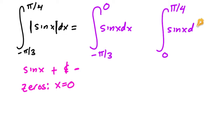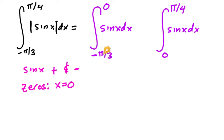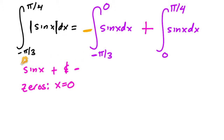Whichever interval sine is negative on, you multiply by a negative. Since sine is negative from negative pi over three to zero, you add a negative on the outside of that integral to make it positive. Then the second integral is already positive, so it stays as is.